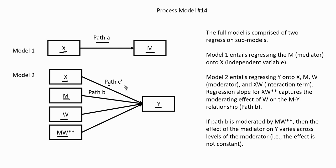In model 2, we get a regression slope for the effect of X on Y — that's path C prime, reflecting the direct effect of X on Y. Path B is actually reflecting a conditional effect of the mediator on Y, and I say conditional because we are specifying that the effect of our mediator on Y depends on the level of variable W. If we have statistical significance associated with the interaction term's regression slope, that gives us evidence of moderation occurring with respect to path B.